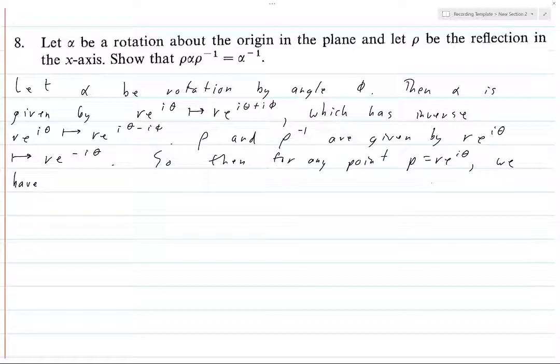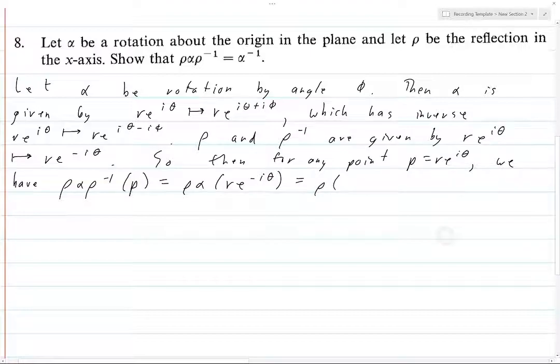So anyways, what do we have? We want to prove this thing. So let's apply this thing to P. So that's going to be rho alpha and then rho inverse of P. That's just going to be R e and then it's going to minus the i theta and then alpha. What's alpha going to do to it? It's going to add that i phi up there in the exponent.